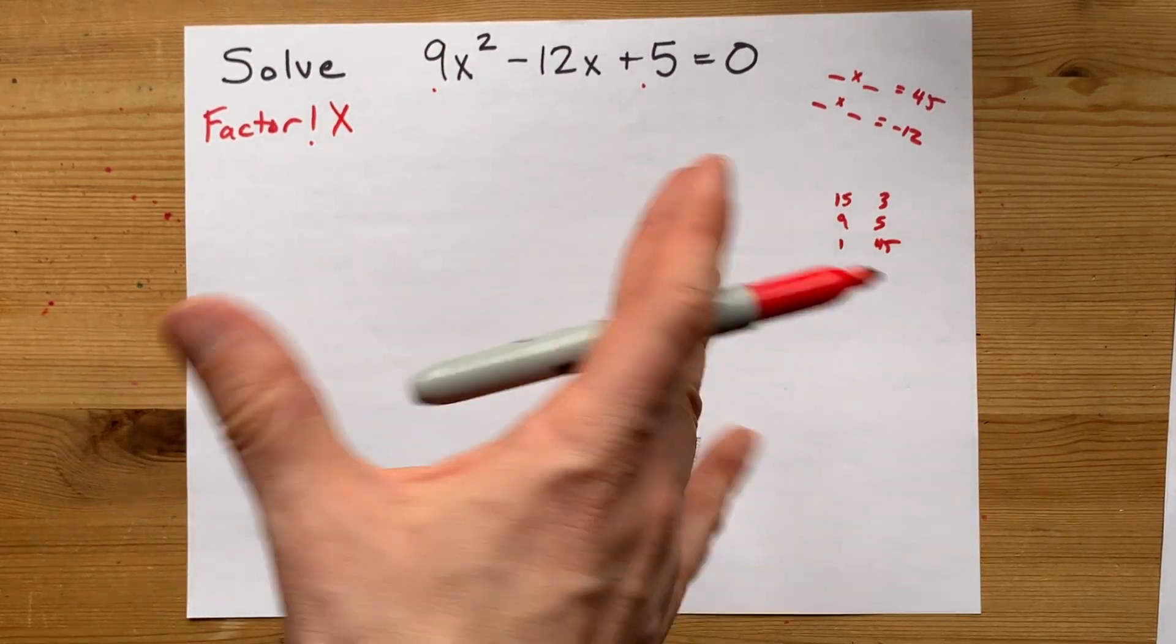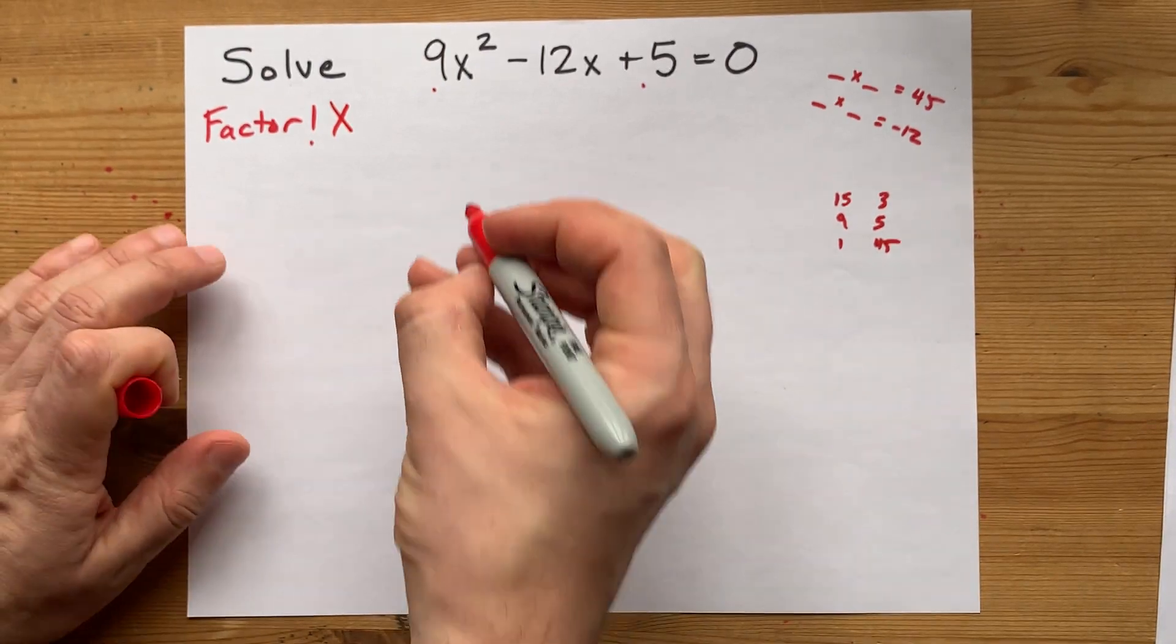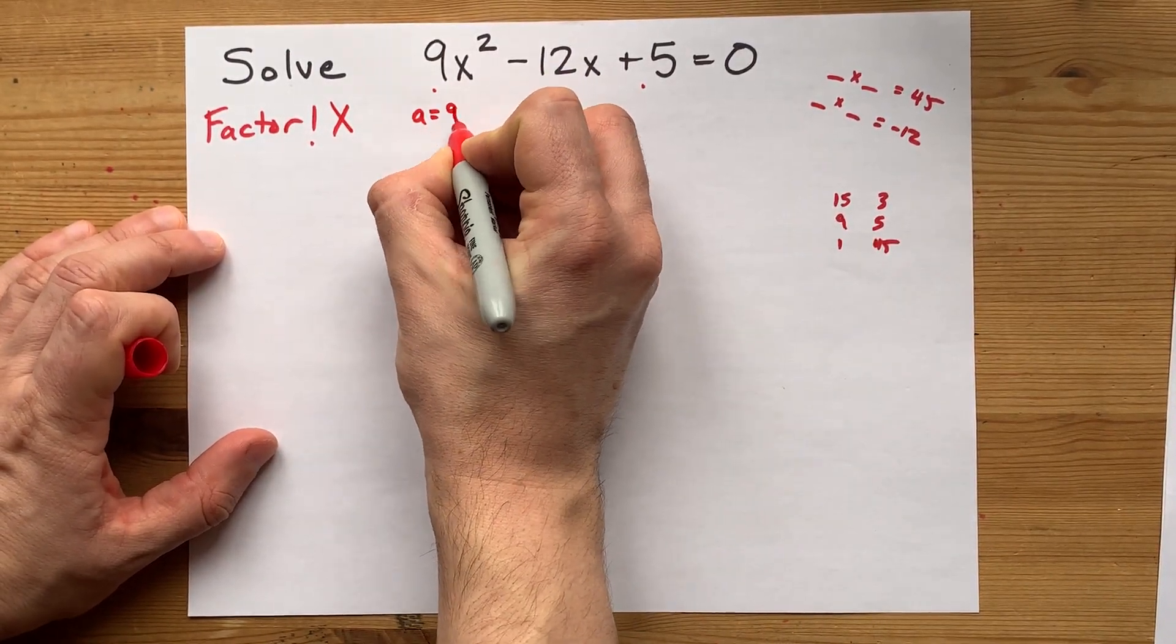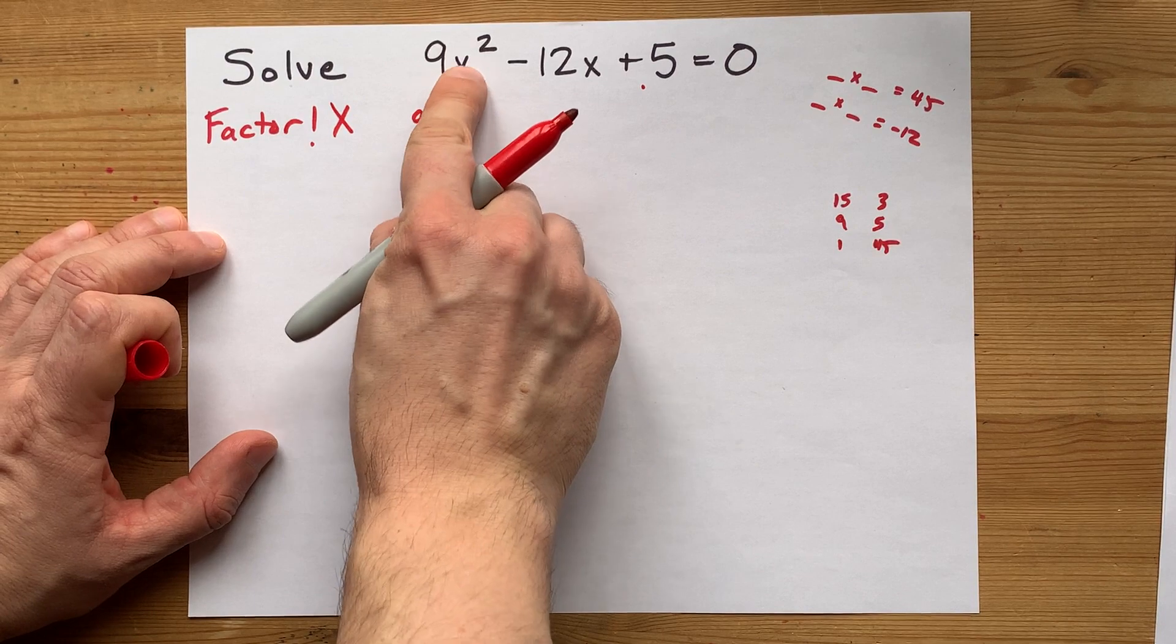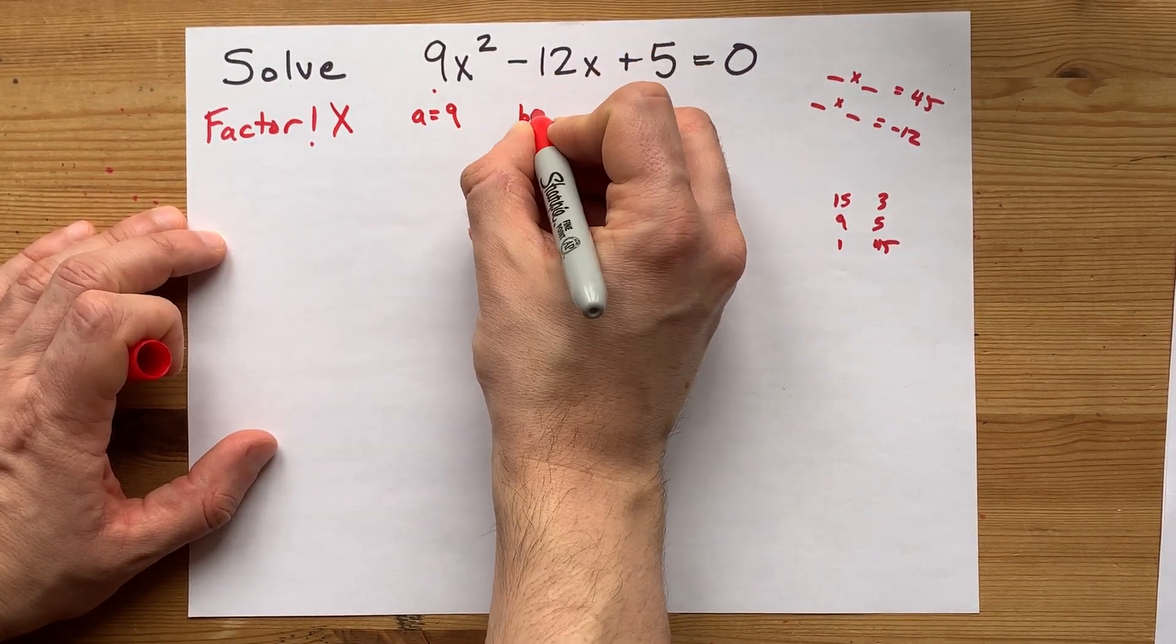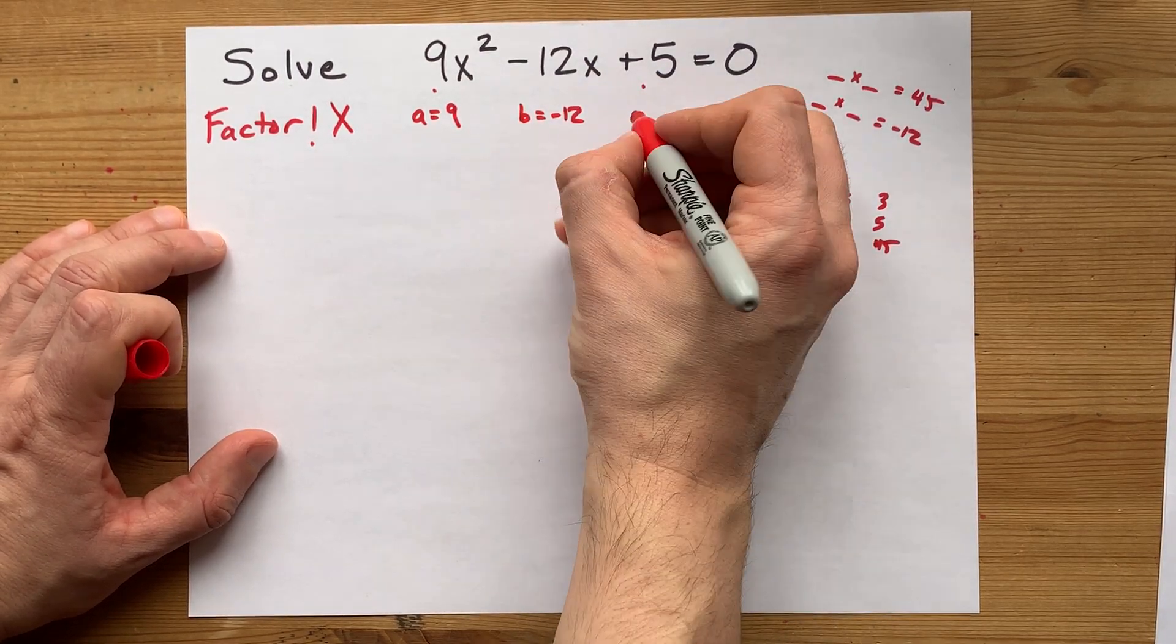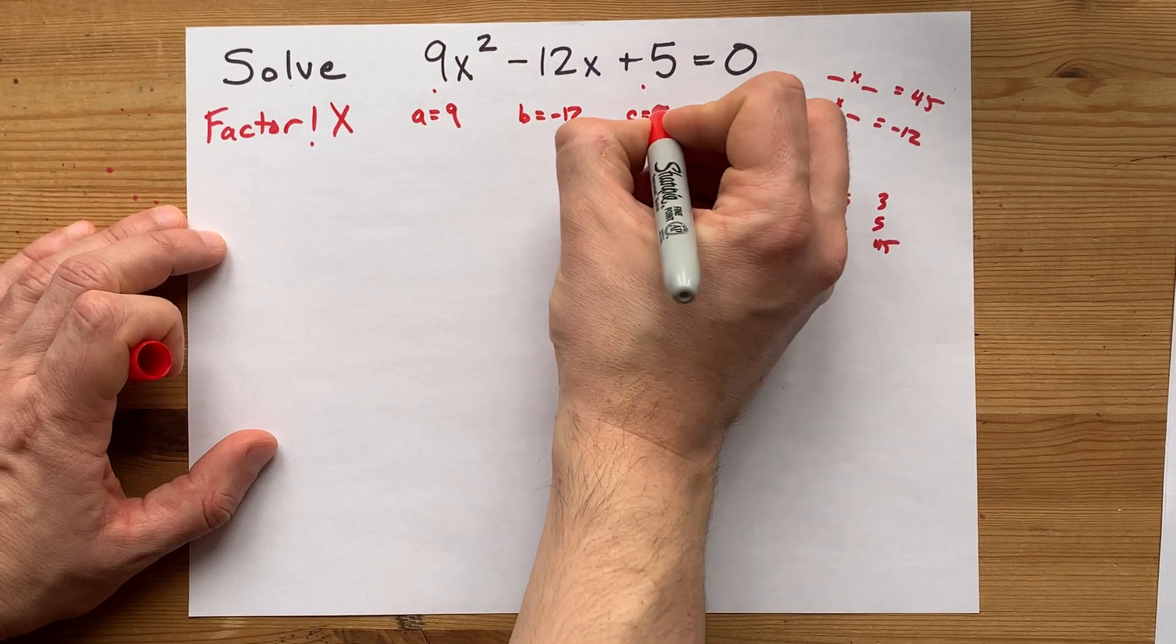Well, you could do other things like completing the square and then using opposite operations, but that sounds like too many steps. The way the quadratic formula works is that the number in front of x² is A. The number in front of x is B, and here it's negative 12. You've got to take that negative with you. And the number on its own is C.